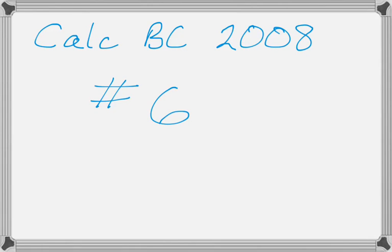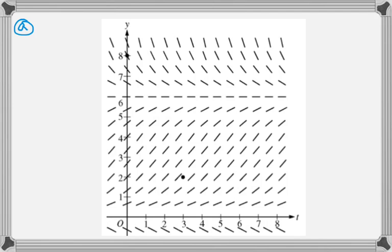Alright, this is number 6 from 2008's BC exam, and this is a really good BC question. It's got a logistic differential equation, although you don't really use it in that sense, but it is logistic. It's got a slope field, it's got Euler's method, Taylor polynomial, so let's see what we can do.